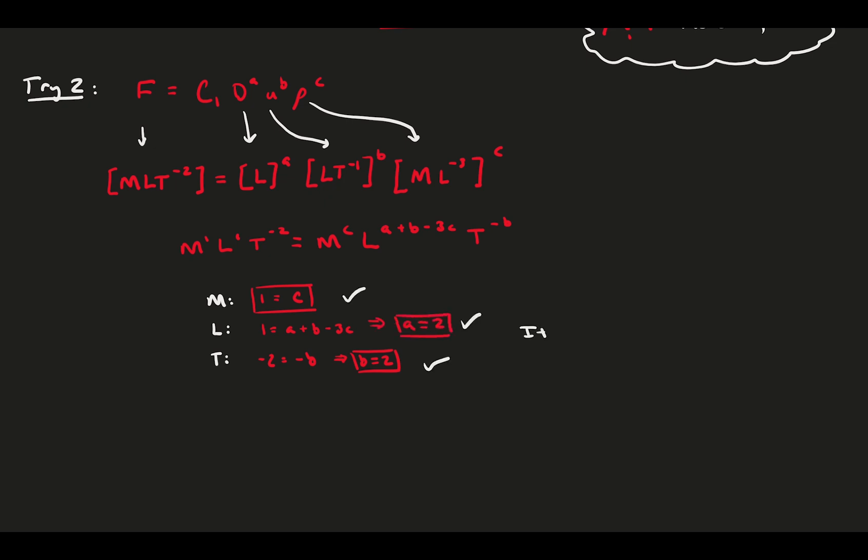Good. The equations are satisfied. This means there is a combination of these three parameters that make the units of force. Our analysis, completely lacking any physics knowledge, says that the force goes as diameter squared, velocity squared, and linearly with density. Out front, we have an unknown unitless constant.